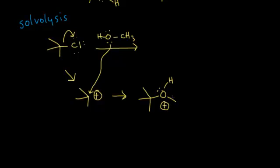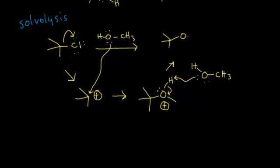The lone pair on oxygen bonds with the carbon, giving the oxygen a positive-1 formal charge. In the next step, another molecule of methanol comes along — this time acting as a base rather than a nucleophile. Its lone pair takes the proton, kicking the electrons onto the oxygen, and we end up with our product. This is an example of solvolysis. In the next video, we'll look at the stereochemistry of an SN1 reaction.